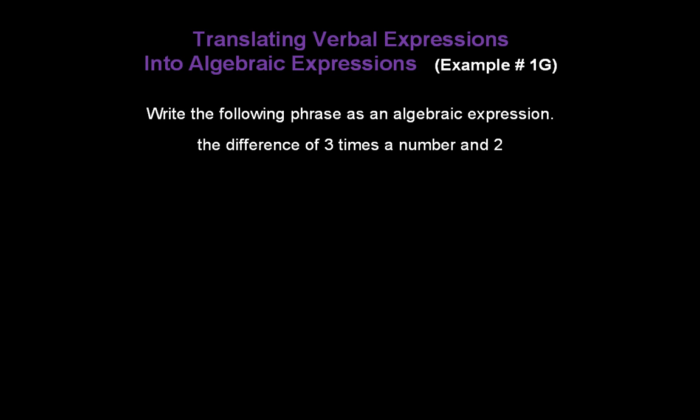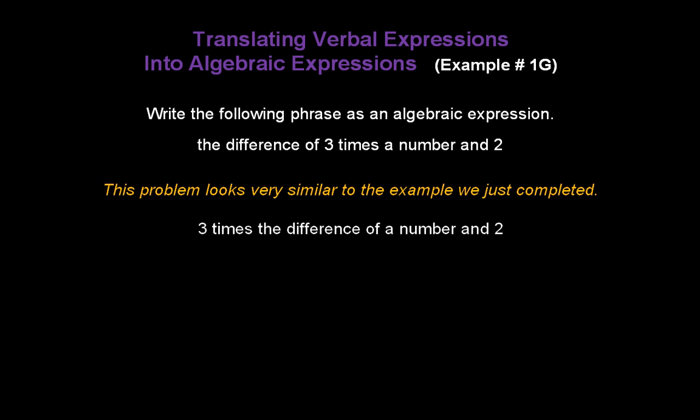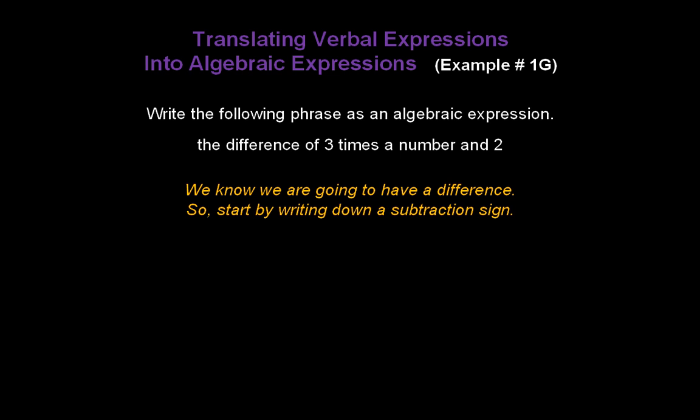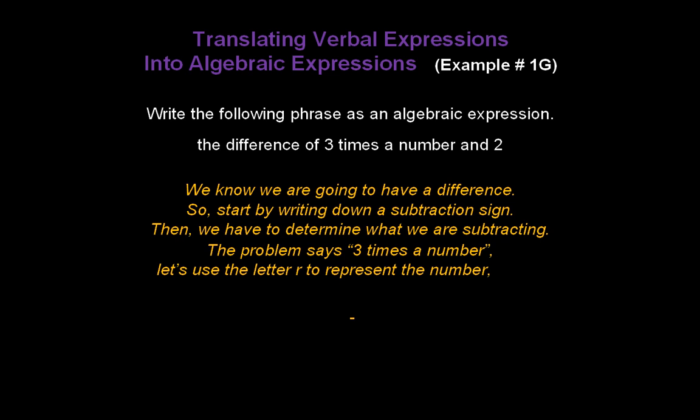The difference of 3 times a number and 2. This problem looks very similar to the example we just completed. However, there's a big difference in the way we set it up. The words the difference are located in different parts of the verbal expression, and that changes the way we set up the mathematical expression. Start by writing down a subtraction sign. The problem says 3 times a number. Let's use r. So 3 times r. And 2 goes after the subtraction sign. That's our algebraic expression.